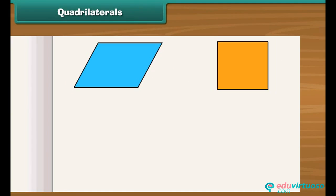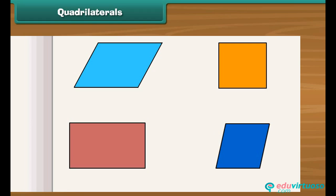What will you call those polygons which are formed by four line segments? Such polygons are called quadrilaterals. There are several types of quadrilaterals.